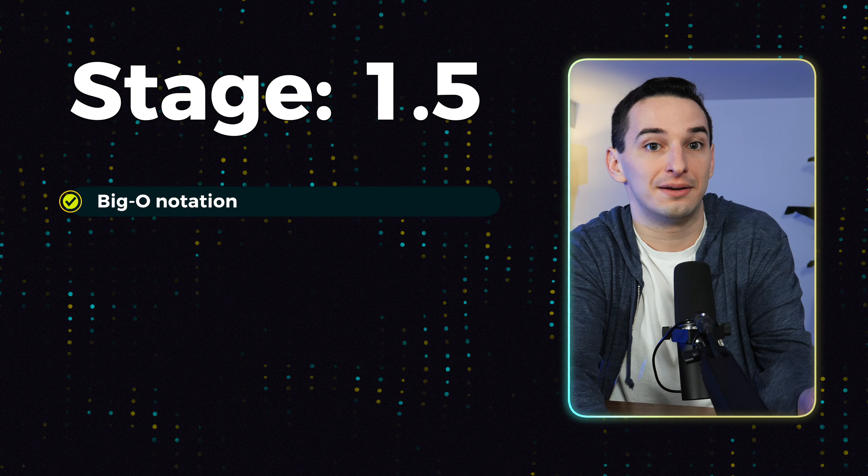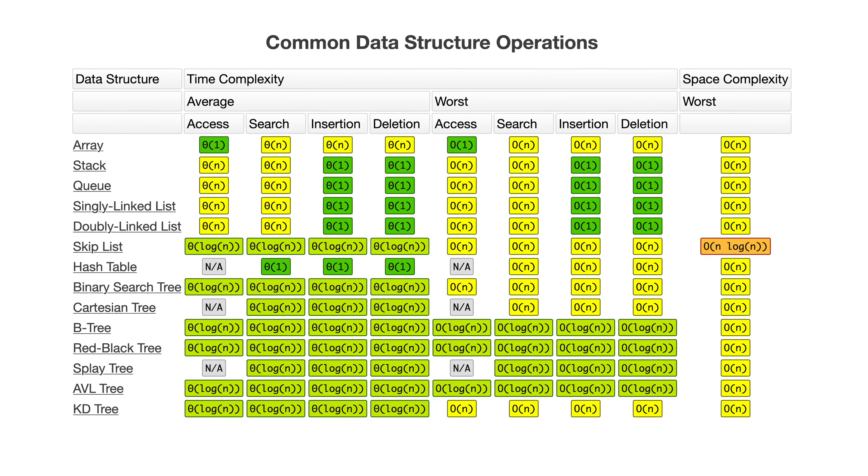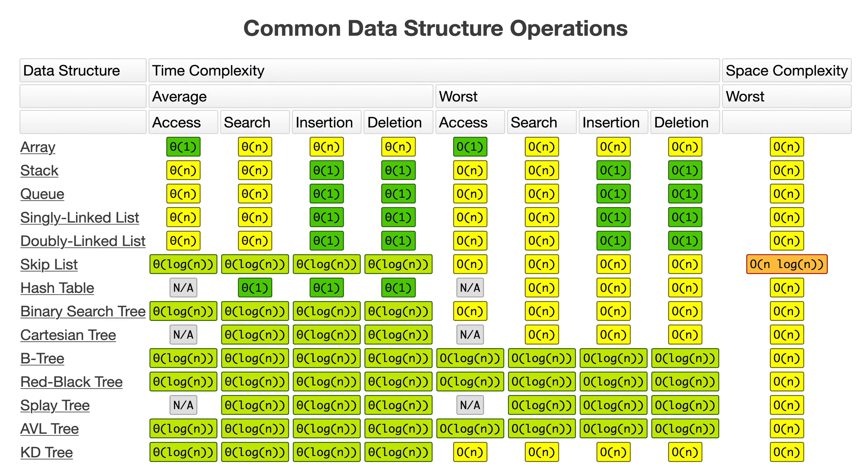Now once you've gotten to this point, you should have a breadth of understanding of different data structures. But before moving on to developing a more in-depth understanding of each of them, I would first make sure you also understand big O notation as well as complexity analysis. This is essentially just a fancy way of measuring the performance of algorithms as input sizes get very large, and in particular we use big O notation to describe the differences and trade-offs between different data structures.